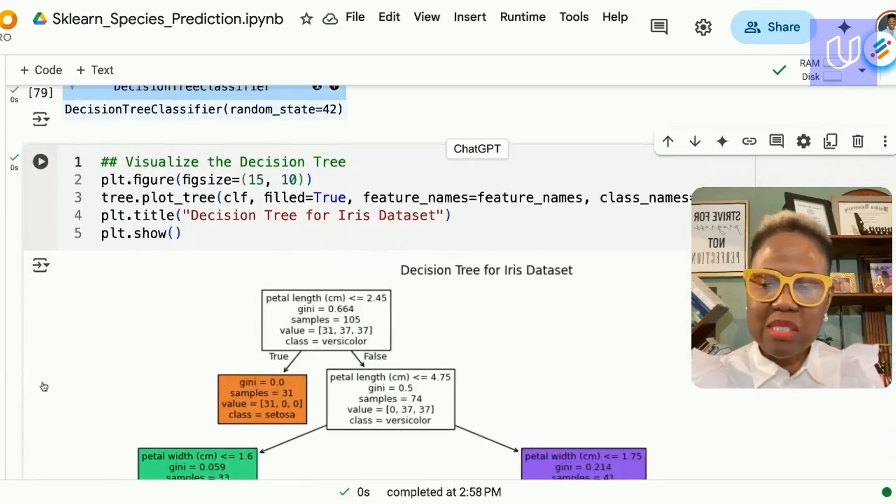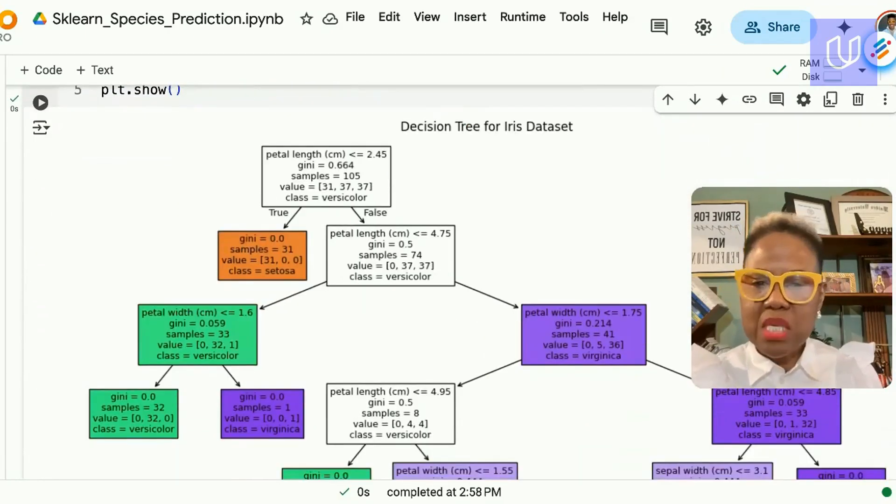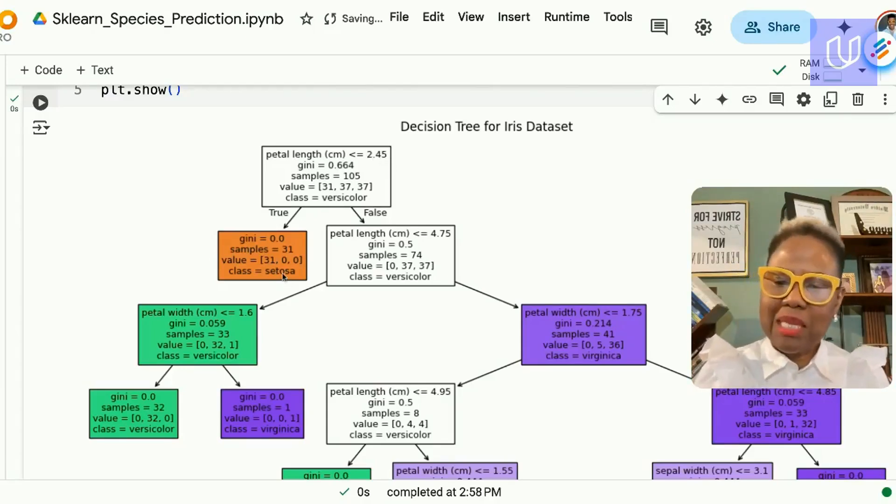One of the good things about the decision tree it lends itself to lovely visualizations. Here we see a visualization of our model and it tells us that the most important feature is the petal length. Anything that was less than or equal to 2.45 was put into the setosa class.